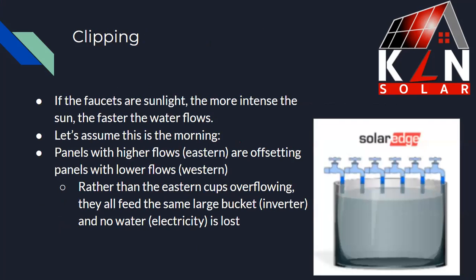Using the faucet example again: the faucets are the intensity of sunlight, the more intense the sun the faster the water flows, and the bucket is the size of your inverter. In the morning, your east-facing panels have higher flow, but your west-facing panels are flowing at a slower rate. The result is that you're catching the higher production from your east-facing panels while compensating with the underproduction of the west-facing ones. You don't have anything spilled because you're not exceeding the total system size — rather than individual cups overflowing, everything is still caught in the single bucket.